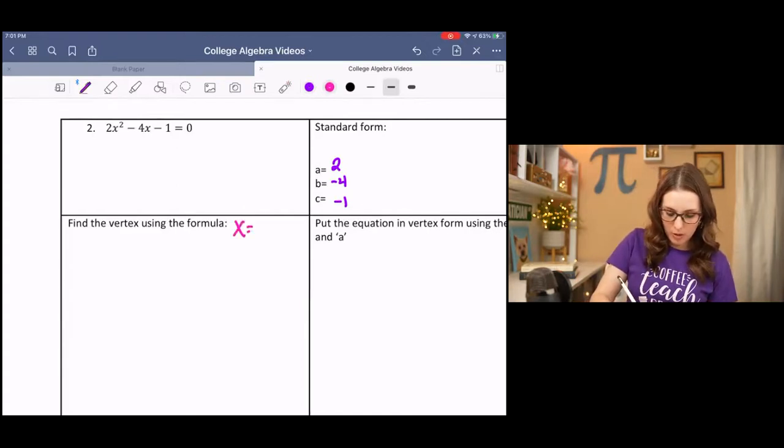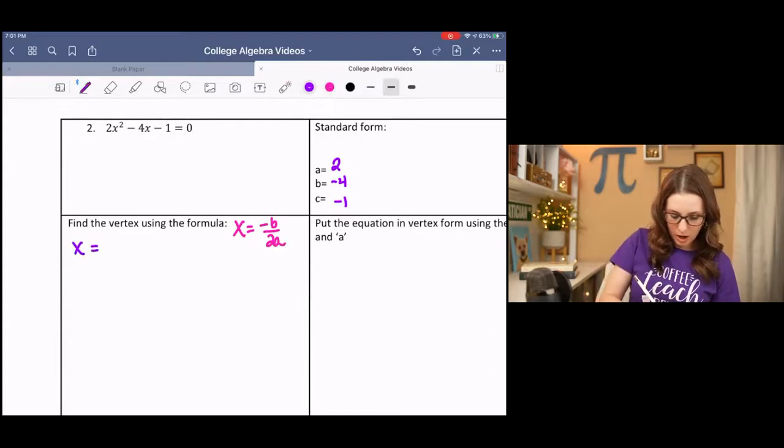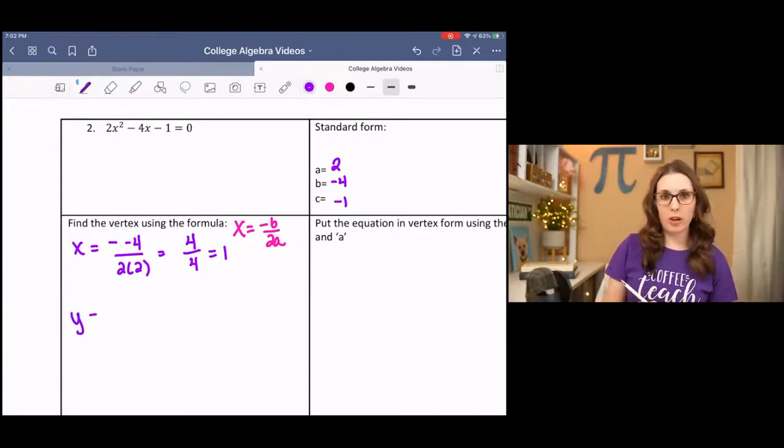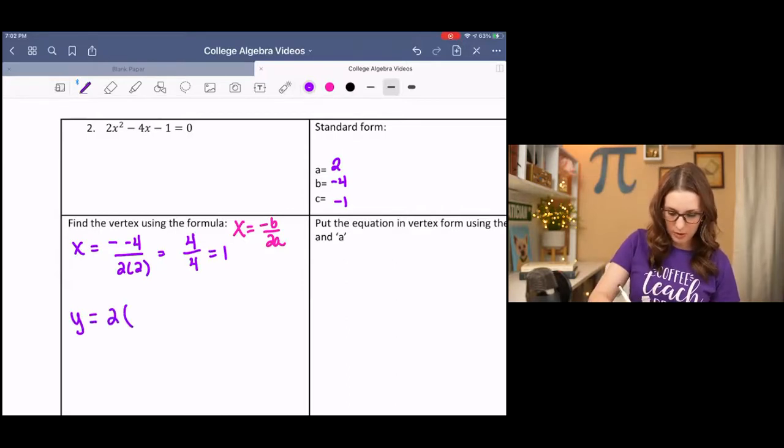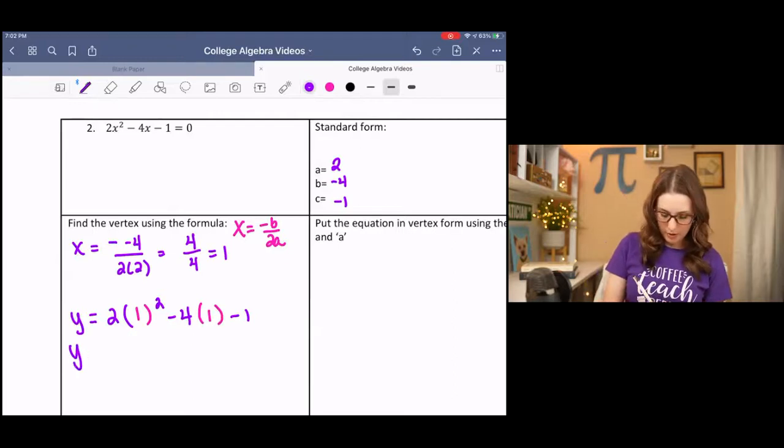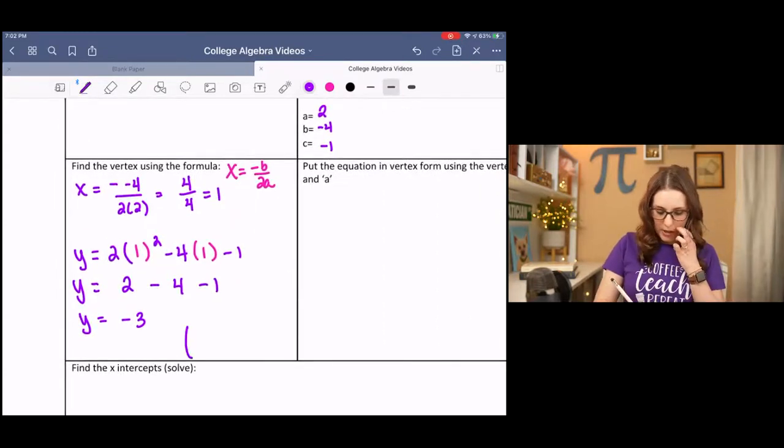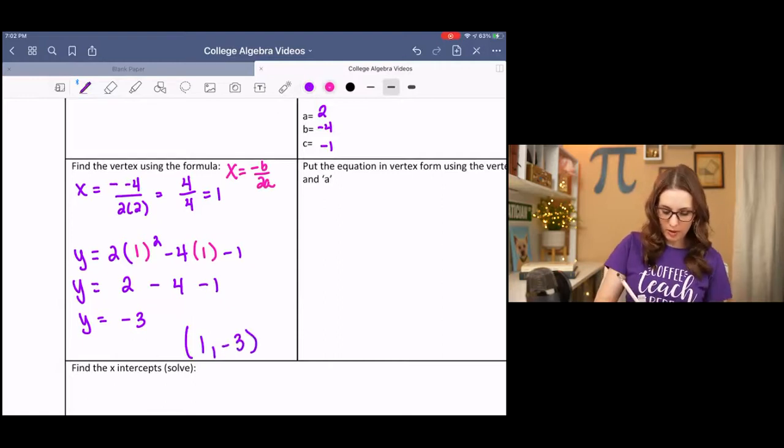In the first part, we're using the vertex formula. So we are plugging in our values negative B over 2 times A. And we end up with this minus a negative, which becomes a positive 4 over positive 4 is 1. Now that we have our Y coordinate, we can, sorry, our X coordinate, now we can find our Y coordinate, 2 times X squared minus 4 times X minus 1. Then simplify. 2 times 1 squared is 2 minus 4 times 1 minus 1. And we get negative 3. So we have now, our vertex is 1, negative 3, which represents H and K.